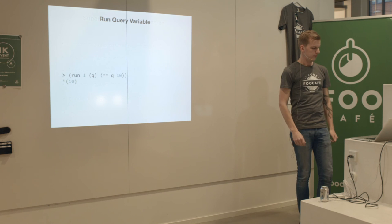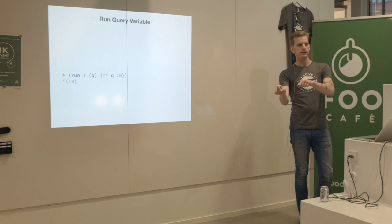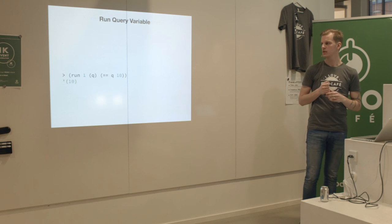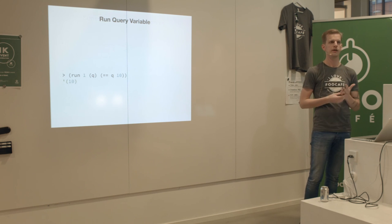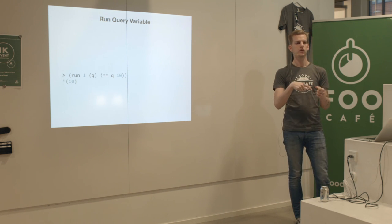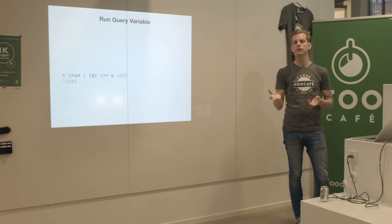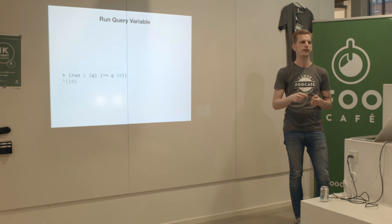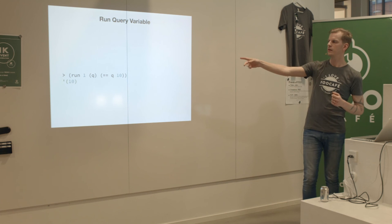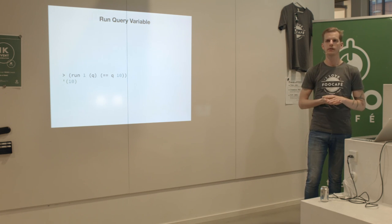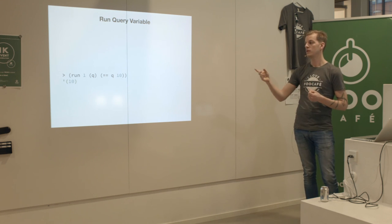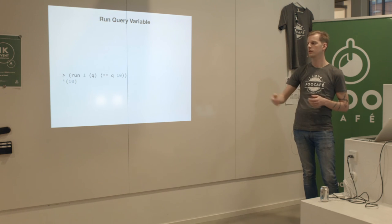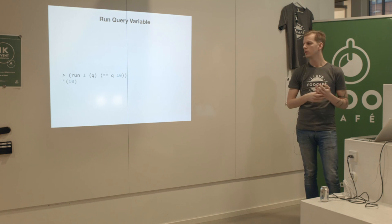The '==' is used to unify terms - two terms have to be equal to unify; if not, the goal fails. In the first example, using run we get a query variable Q, unify Q with 10, and get back a list containing 10. Run-1 means 'give me one answer.' We could run a thousand and still get the same result because Q must be 10 - there's no other way to satisfy the goal.